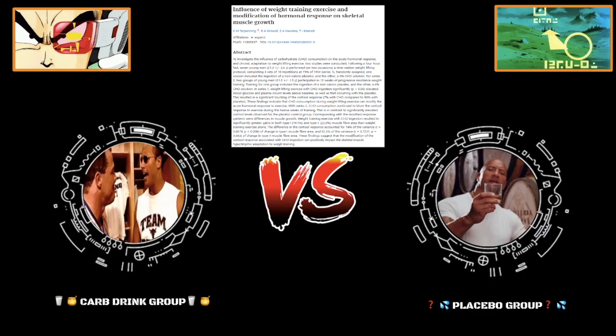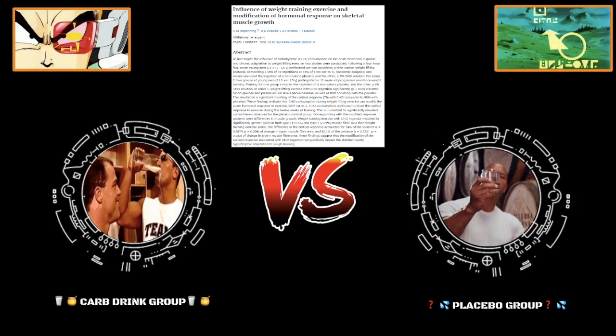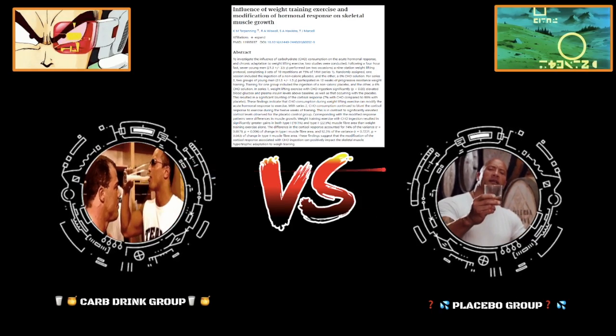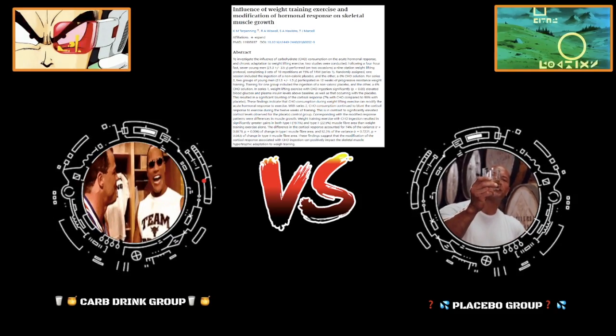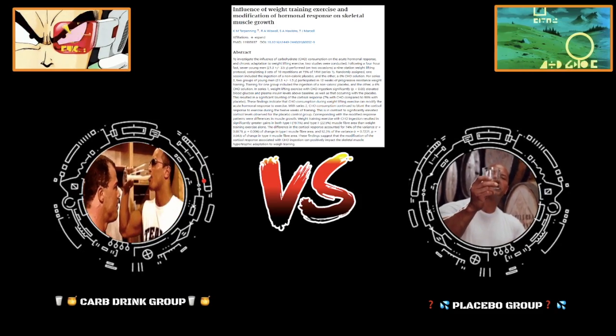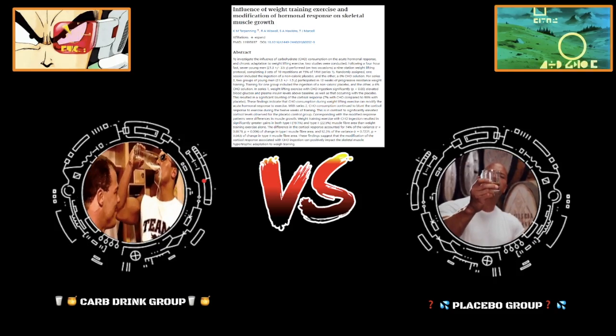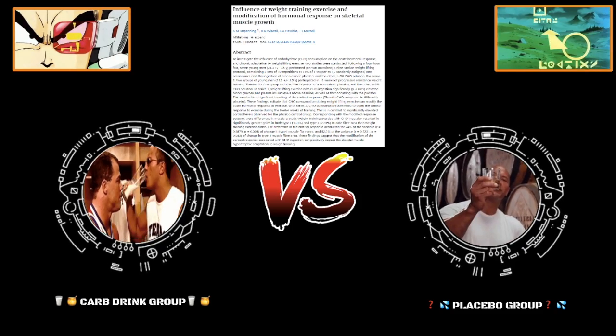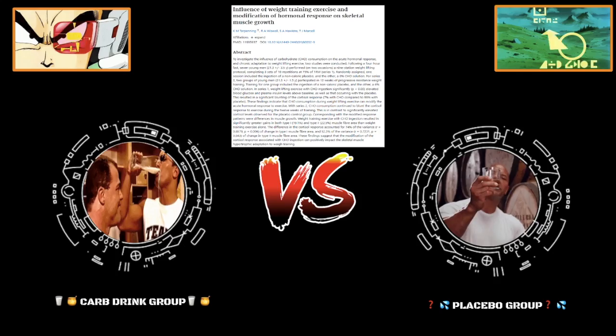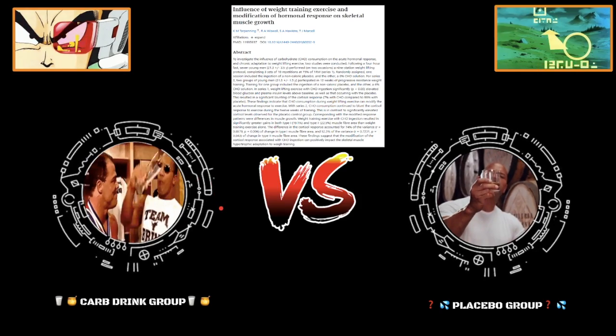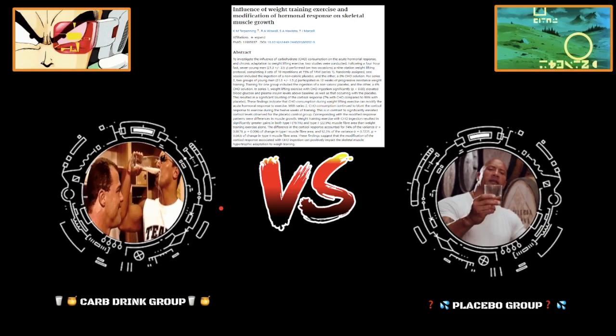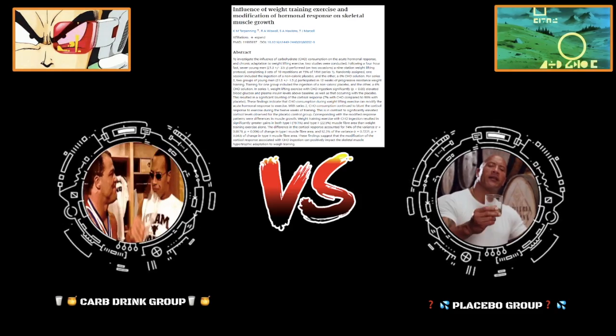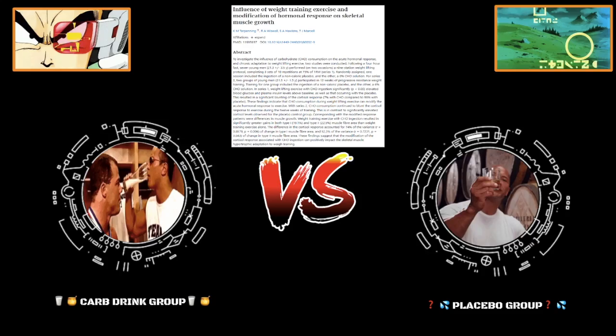The other group was given a placebo. Basic stuff. No one in any group had any idea what they were getting. They were put through a workout program and the goal was to see if the spike in cortisol from training had any correlation with the amount of muscle growth they put on after the 12-week training program. It was 12 weeks, fairly long compared to most studies which are only eight weeks.